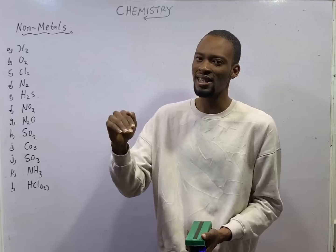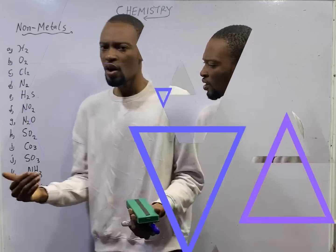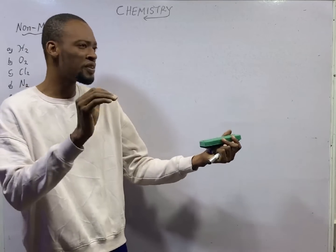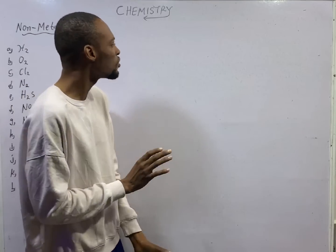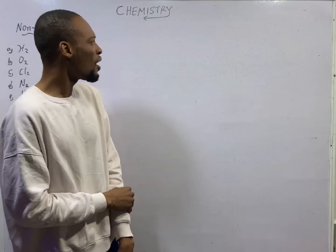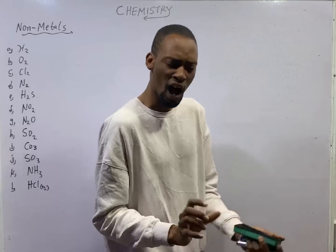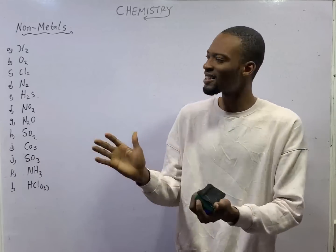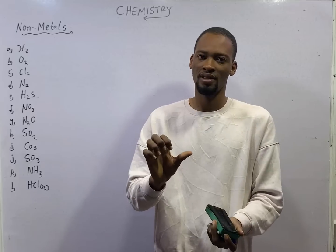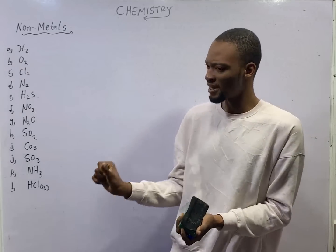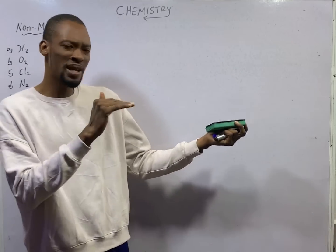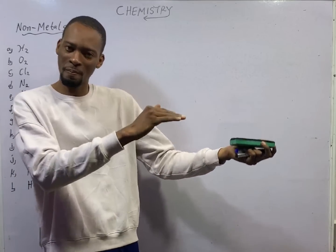A molecule is the smallest particle of a substance which can exist on its own and still retain the properties of that substance. Atom cannot exist on its own. Elements are made up of atoms of the same type. When two or more elements are combined chemically, there is a chemical reaction and they form compounds. These elements can be metals, non-metals, metalloids, or semi-metals.